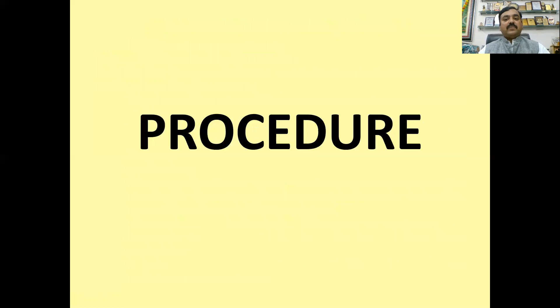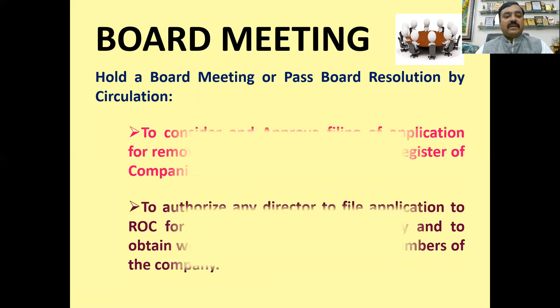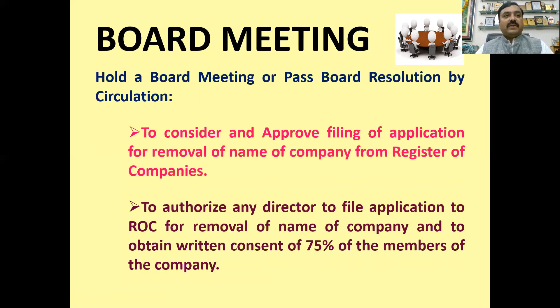Now what is the procedure? First of all, a board meeting will need to be called for the company. In the board meeting, resolutions are passed on two matters. The first matter is that the company directors approve the removal of the name of the company. Second, we have to get approval from the members. If the company is not calling a meeting, then we need to obtain 75% of the members' consent.